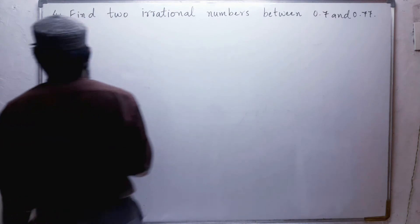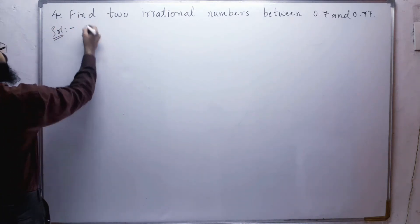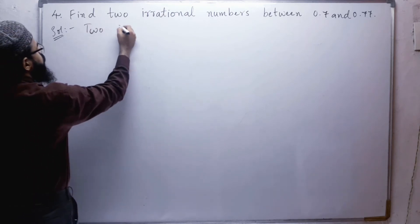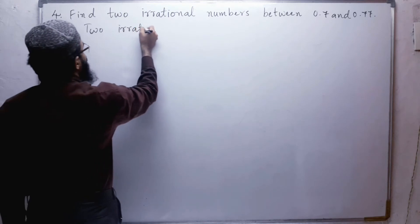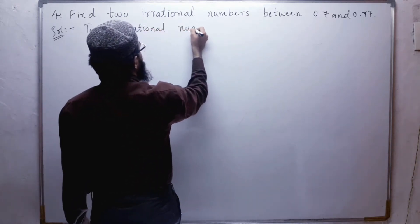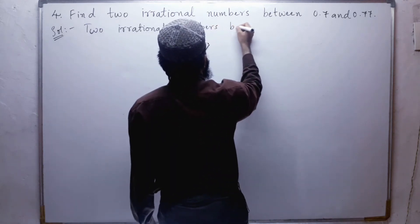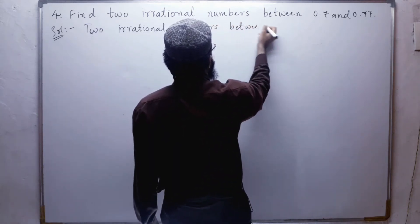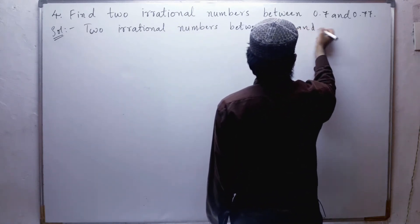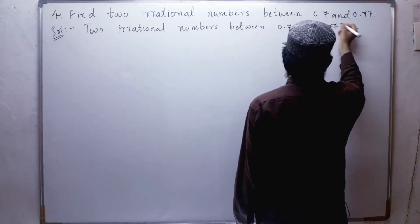So let us write the solution. Two irrational numbers between 0.7 and 0.77 are: